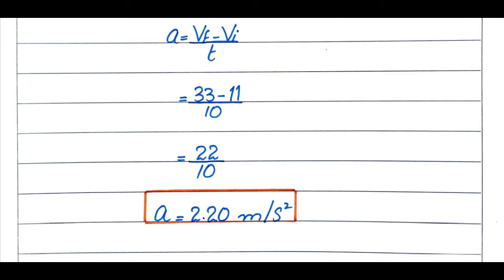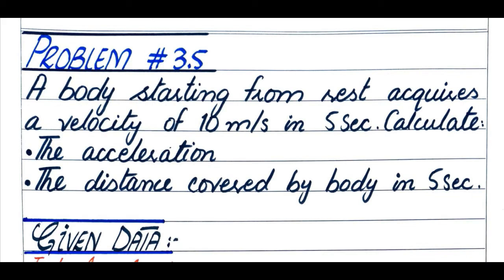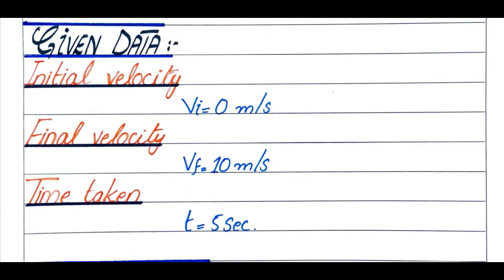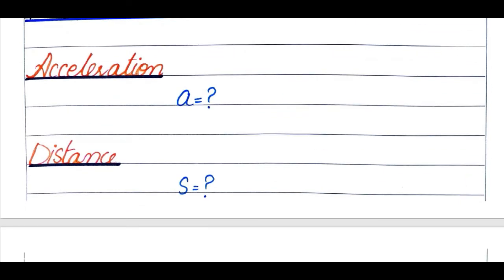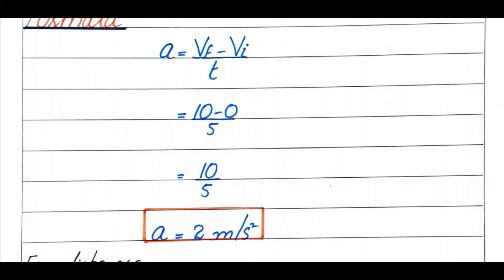Problem number 3.5: A body starting from rest acquires a velocity of 10 m/s in 5 seconds. Initial velocity is zero, final velocity is 10 m/s, time is 5 seconds. We need to calculate acceleration and distance covered. For acceleration, using a = (vf − vi) / t: 10 divided by 5 equals 2 m/s².